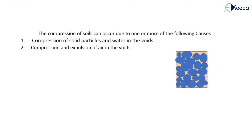The second reason for compression of the soil is compression and expulsion of air in the void. As we all know, air is a compressible material, so this is one of the main causes for compression of soil. When we apply pressure on the soil mass, the air present in the void gets compressed. Also, some air from the soil mass will move outward to the surrounding area where pressure is low.